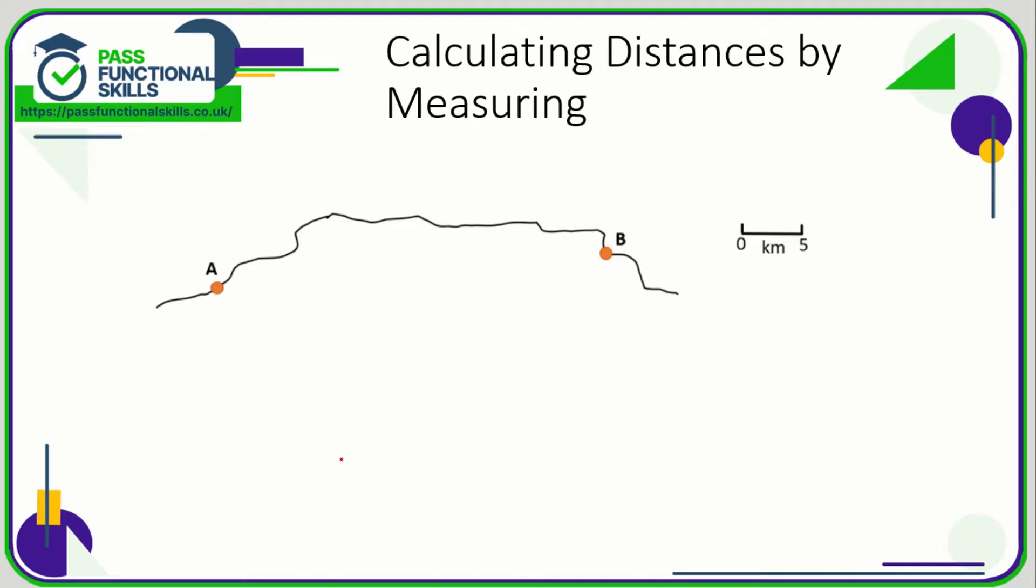Now you might need to calculate distances by measuring. So what is the distance from A to B in a straight line? And we know that this is a distance of 5km.